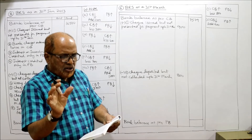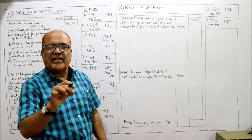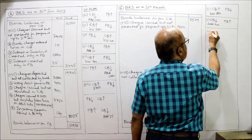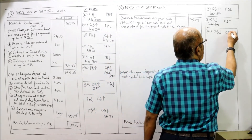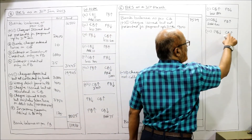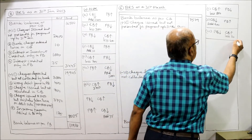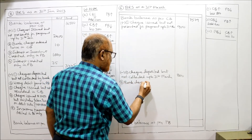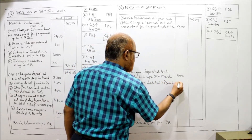Third item: there was a debit of rupees 20 for bank charges in the pass book. Pass book balance decreases. Cash book shows more balance as it was not recorded there. Our starting point, the cash book, shows more balance, so we subtract. Less: bank charges debited in pass book only — rupees 20.